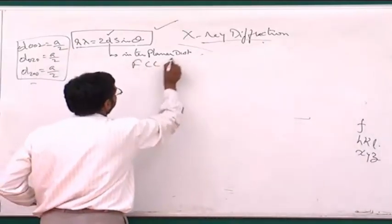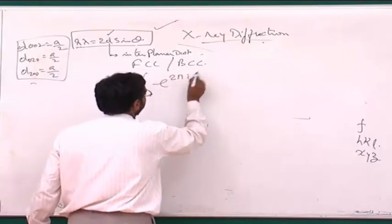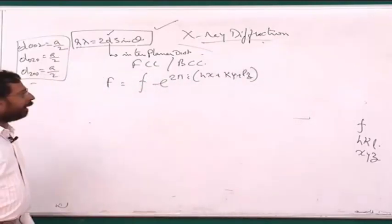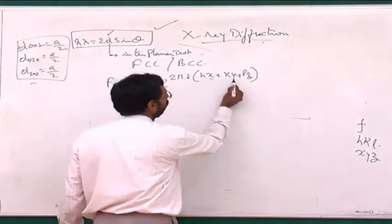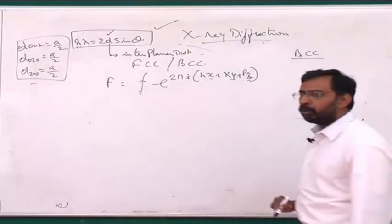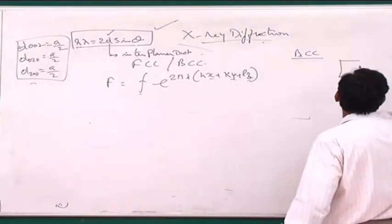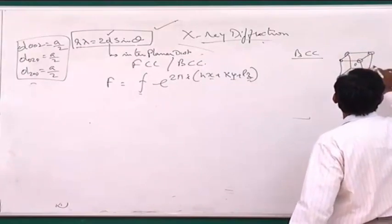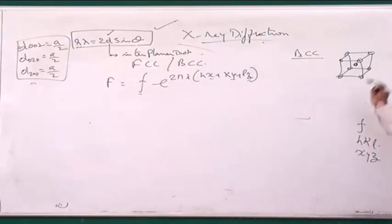Let us rewrite the structure factor formula and apply it to two cases — FCC and BCC. The formula is: F = f × e^(2πi(HX + KY + LZ)). For BCC, we consider pure iron. BCC has two lattice points per unit cell. If I redraw the BCC unit cell, it has lattice points at all eight corners and one inside. For pure iron, there are iron atoms at each corner and at the body center.